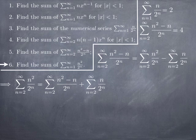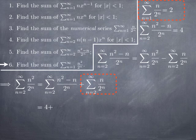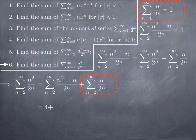So we have the series starting at 2 of n² over 2^n, which sums to 4 (from question 5), minus the series from 2 to infinity of n over 2^n. The series from 1 to infinity of n over 2^n equals 2, so the series starting at 2 is 2 minus the first term when n = 1, which is 1/2. So the series from 2 to infinity of n over 2^n equals 2 minus 1/2.